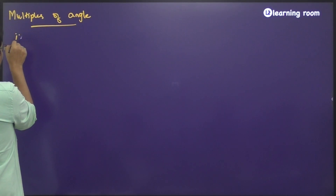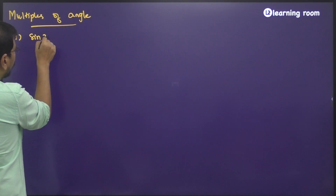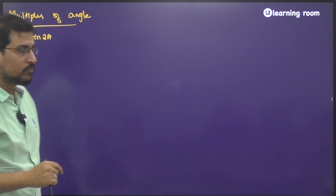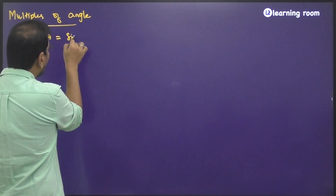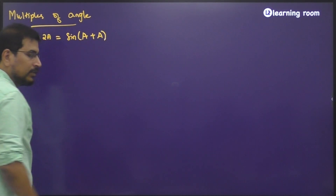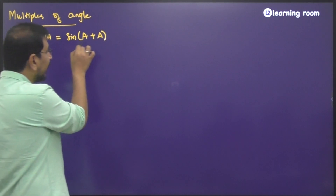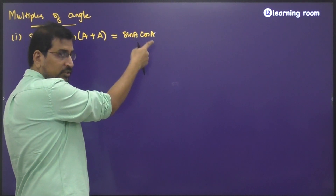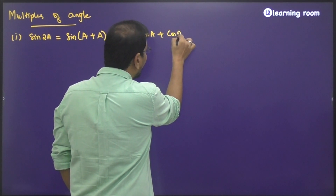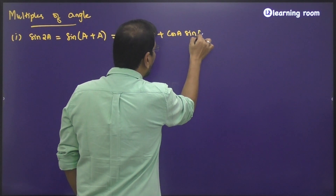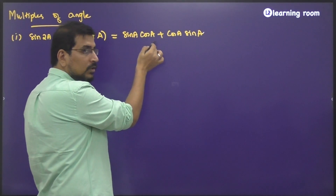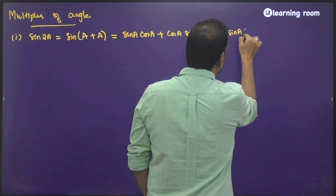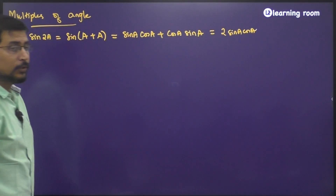I will start with sine of 2a, like how I gave you there. So sine 120, you can write it as sine of 2 into 60. So sine 2a, can I write it as sine of a plus a? So what is sine of a plus b? It is going to be sine a cos b plus cos a sine b. What is b? B is also a only. So sine a into cos a plus sine a into cos a is 2 times sine a into cos a. This is the expression for sine 2a.